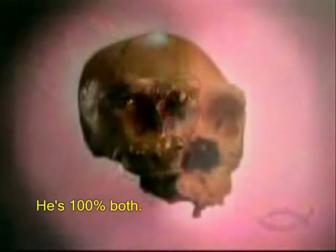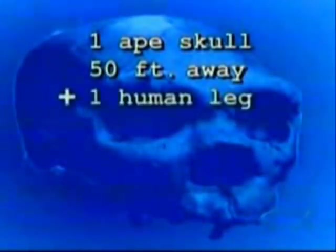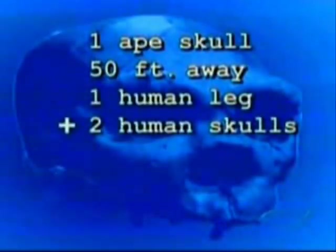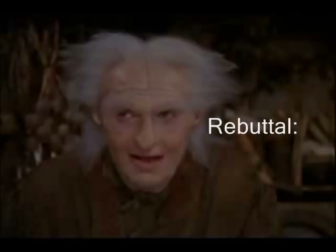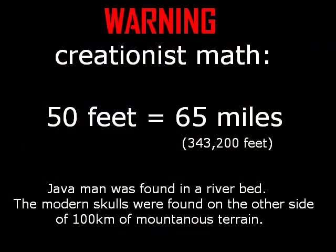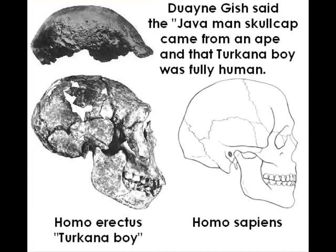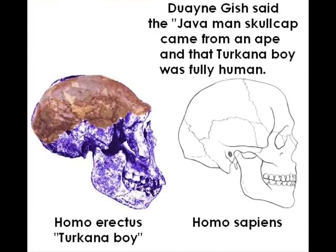Homo erectus, or Java Man, isn't a half-man, half-ape either. The claim that the man who discovered it admitted before he died that it was a fraud — that he confessed he had found a skull about 50 feet away from a human leg and two human skulls and had mixed and matched to create a fictitious creature — is false. The two modern skulls weren't 50 feet away; they were found in a cave over 60 miles away. Despite the many lies repeated by Duane Gish and other creationists, Java Man was just one out of hundreds of Homo erectus individuals documented thus far.